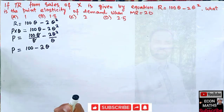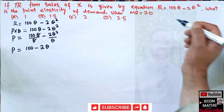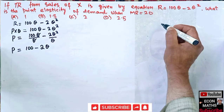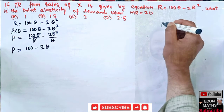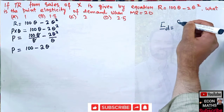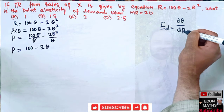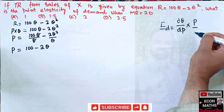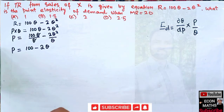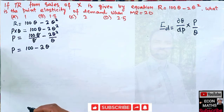We now have our inverse demand function. The formula for point elasticity of demand is: point elasticity of demand = (DQ/DP) × (P/Q).